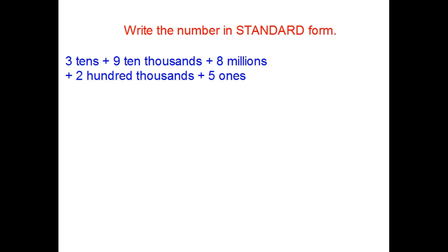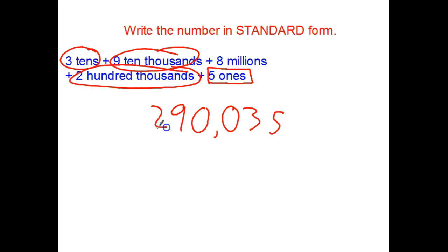Stop the video when you try it out. All right. Here we go. Looking for ones. There they are. Five ones. Tens. I do have them. Three tens. Hundreds. None. Thousands. None. Ten thousands. There's nine of them. Hundred thousands. Two of them. My comma. Eight million. So, my answer would be eight million, two hundred ninety thousand, thirty five.